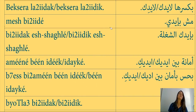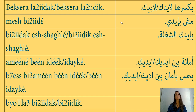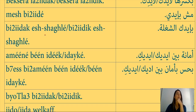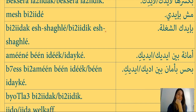Mish bi eidak literally means not in my hand. It's a way to say the situation is out of my control. For example, if someone tells you to stop crying and move on, and you really can't, you say mish bi eidak — I can't, it's not in my hands.